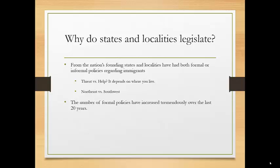Despite this historic legacy, the number of formal policies at the state and local level dealing with immigration has increased tremendously over the last 20 years. In 2007 alone, over 1,500 pieces of legislation were introduced at the state level, and in that same time period 135 local governments introduced legislation. The question is: why are states and localities increasingly legislating on these things, and why now?